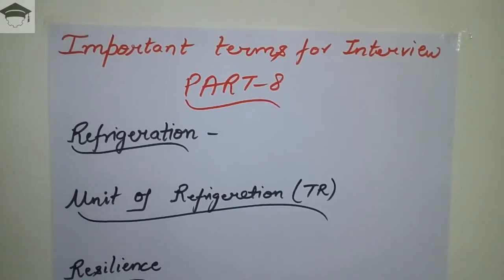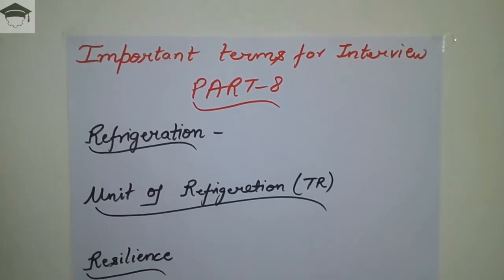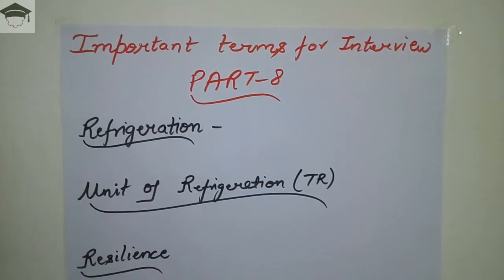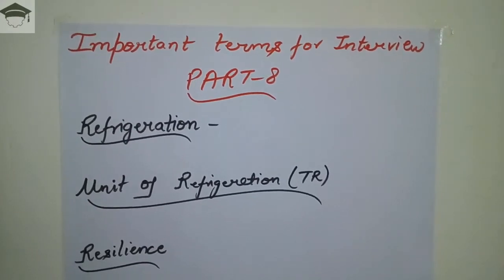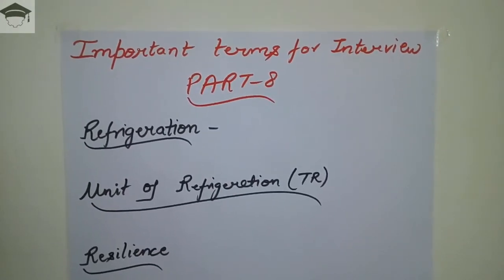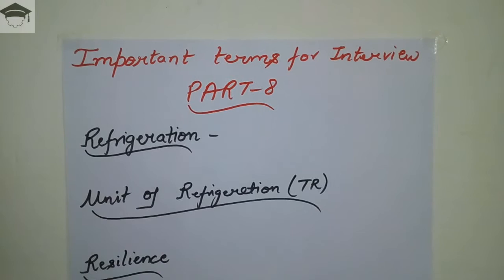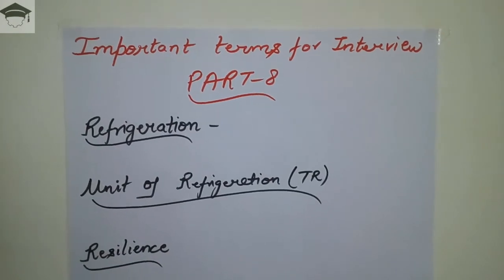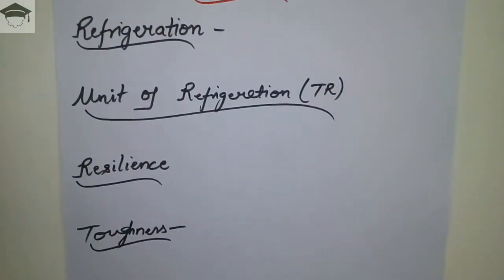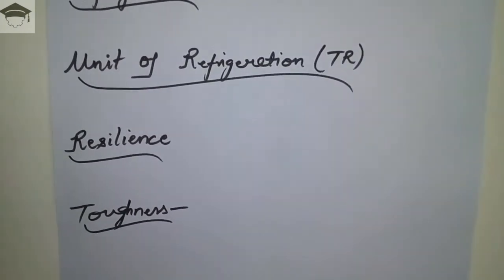So, 1 TR = 3.51 kilowatts = 210 kilojoules per minute. One US ton is equal to 2000 pounds, or 907.185 kg.